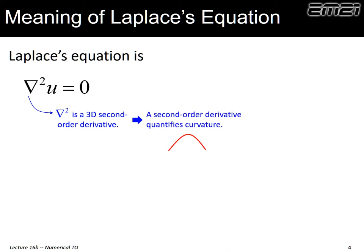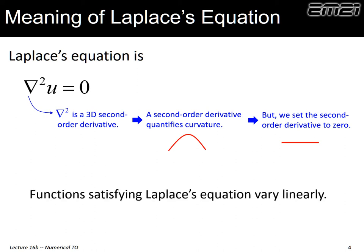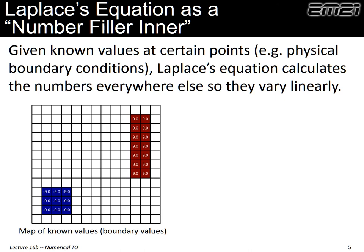In one dimension, we interpret the second-order derivative as curvature, and it's almost that in three dimensions as well. However, in Laplace's equation we've set that second derivative equal to zero, so if the second derivative is zero, that means there is no curvature — we're only finding straight lines. So the conclusion is that when we solve Laplace's equation, we're finding a function that varies linearly. You'll see how this interprets Laplace's equation as a number filler inner: we force the lower left to negative nine and the upper right to positive nine, and all the white squares get filled in so the numbers fade from negative nine to positive nine in a linear way.